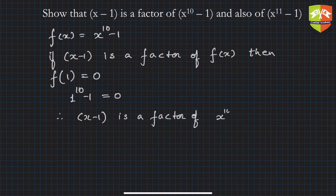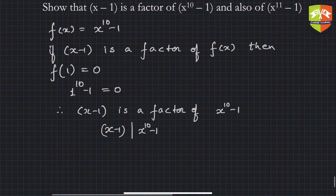That is x^10 - 1. The other way of writing this is (x - 1) divides (x^10 - 1). Now let's check for the other one, (x^11 - 1).